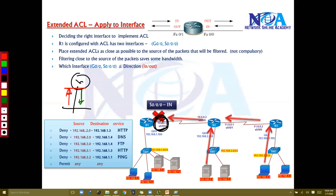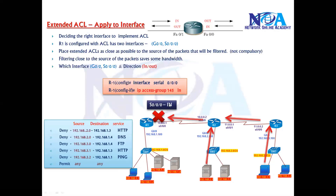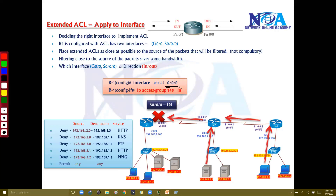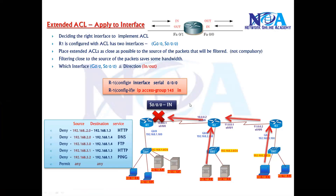You can apply the ACL on S0/0/0 inbound and it will not impact any other traffic, because in an extended ACL we specify both source, destination, and protocol — unlike standard ACL which may accidentally deny other traffic. The configuration would be: interface S0/0/0, then 'ip access-group 145 in'. Alternatively, if you don't want to restrict on the WAN interface, you can apply it on G0/0 instead.